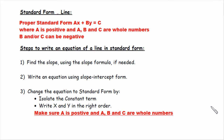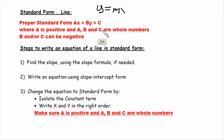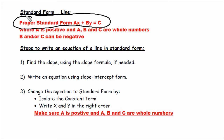Alright, standard form line. So far we've only talked about one form, which was slope-intercept, and that was y equals mx plus b. Today we're talking about a new form, and that is standard form. Standard form is written out right here: ax plus by equals c.